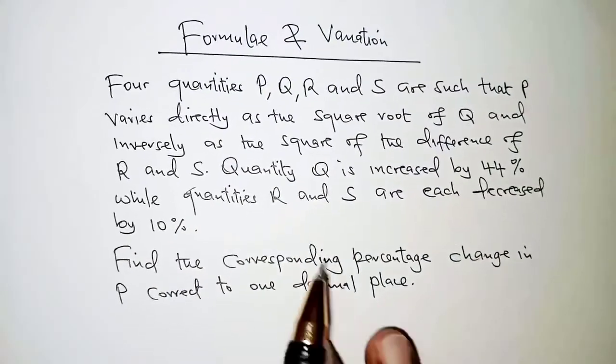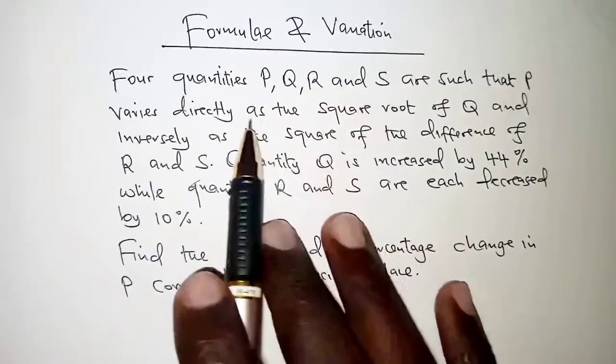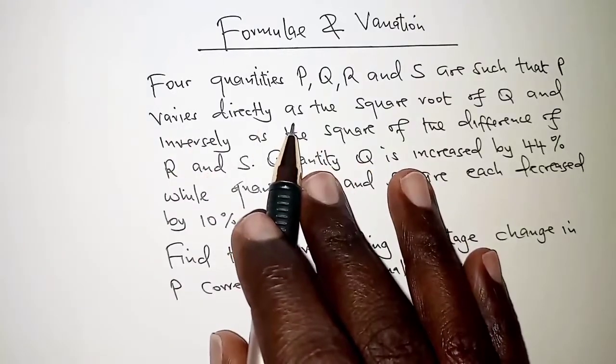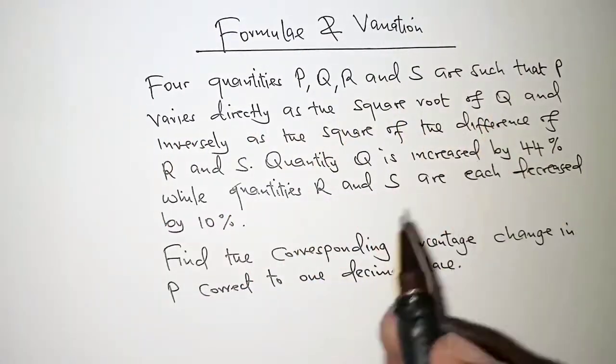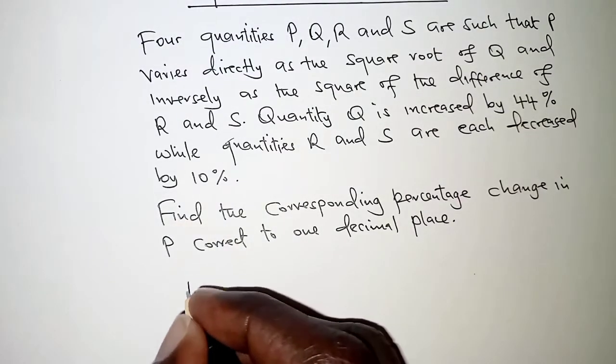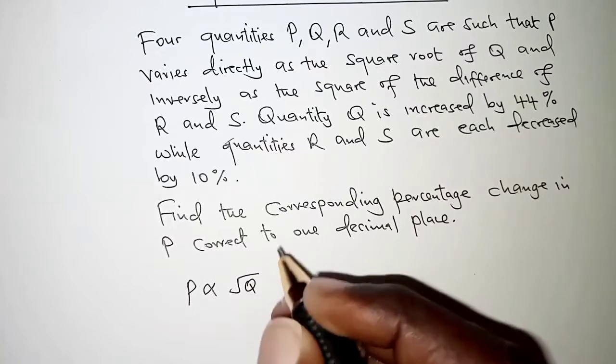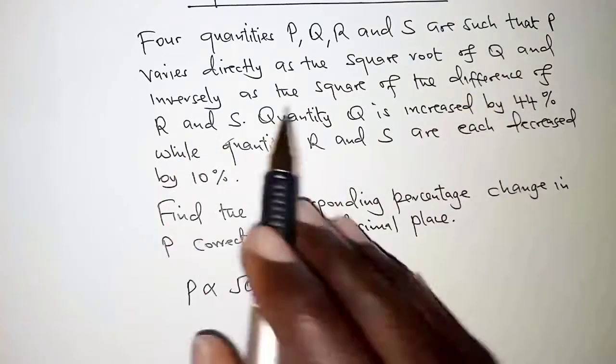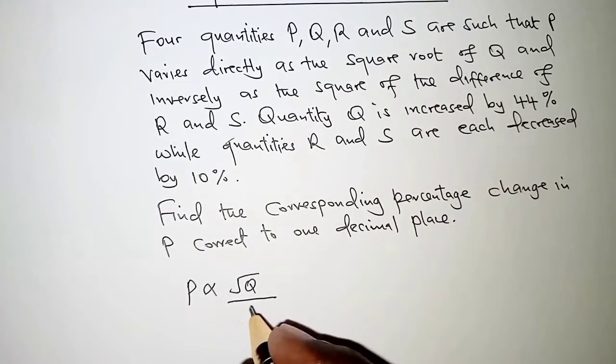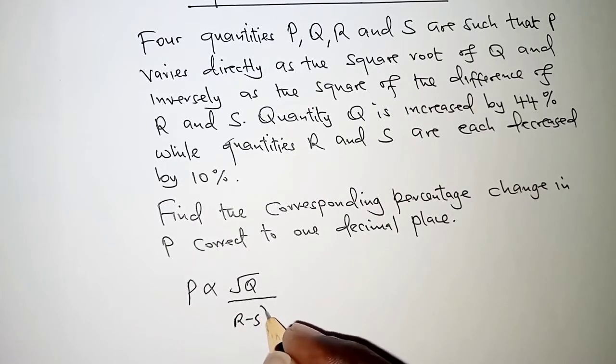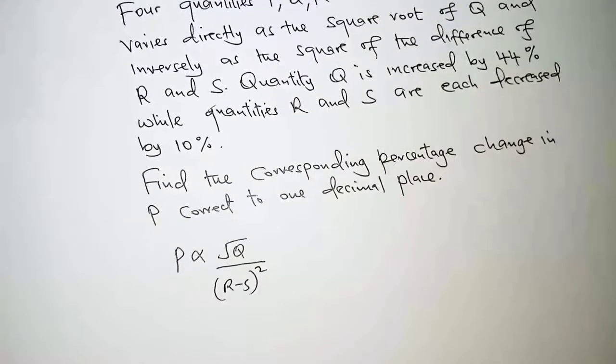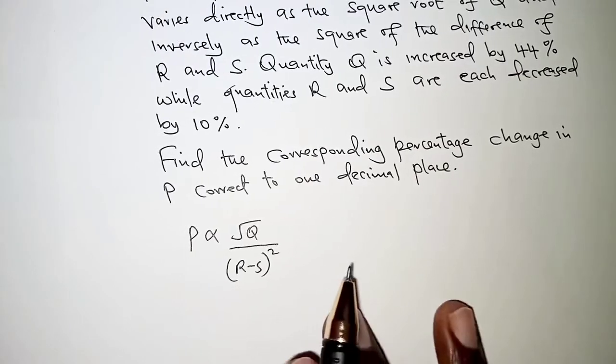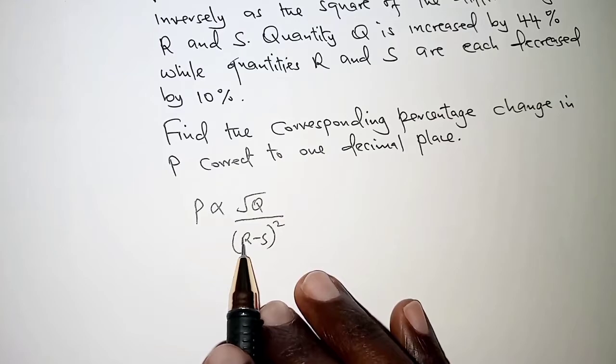In this particular problem we will first of all interpret the variation here. We are told four quantities P, Q, R, and S are such that P varies directly as the square root of Q and inversely as the square of the difference of R and S. So we will have R minus S squared. In this case, even if you write S minus R squared you still arrive at the same result. So let's pick on R minus S.